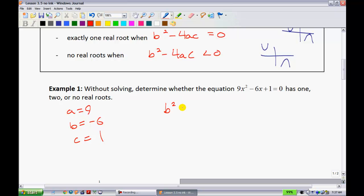So now we have b squared minus 4ac, and I'm simply just going to substitute into that. So substituting in, I have negative 6 all squared minus 4 times 9 times 1. Simplifying now, I have 36 minus 4 times 9 is 36 times 1 is 36. So that gives me 0.